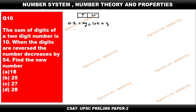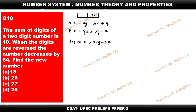After the number gets reversed, which means YX, after getting reversed it will become 10Y plus X. It is given that after getting reversed, that number 10Y plus X is equal to the original number decreased by 54.